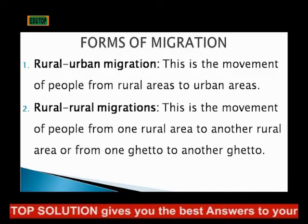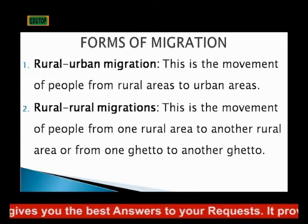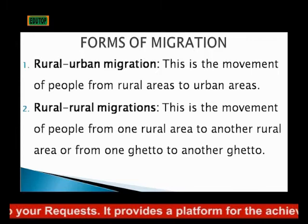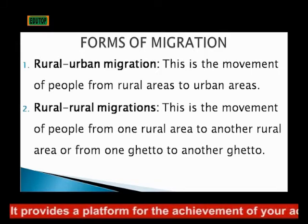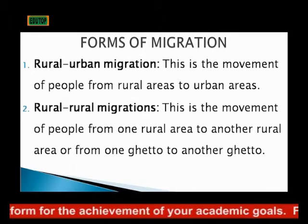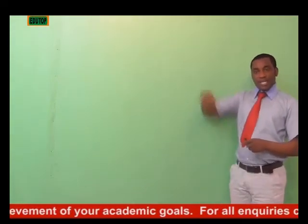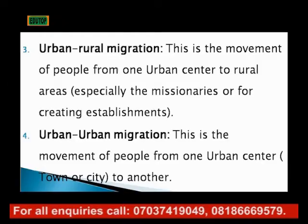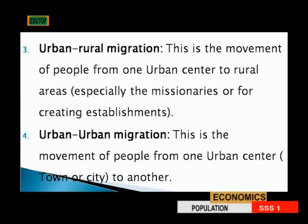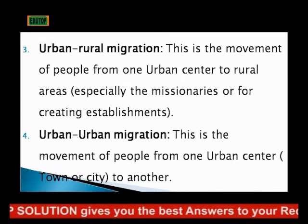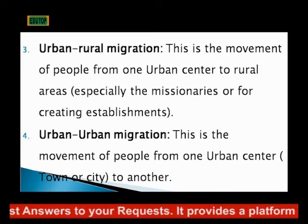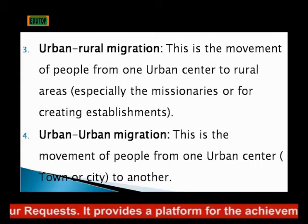What are the forms of migration? We have rural-urban migration, which is the movement of people from rural areas to urban areas, like moving from villages to cities. Two, we have rural-to-rural migration, which is the movement of people from one rural area to another rural area, perhaps because of more resources or advantages in another rural area. Three, we have urban-to-rural migration, which is the movement of people from one urban center to a rural area, especially missionaries or those establishing businesses where needed resources are available in a rural area.